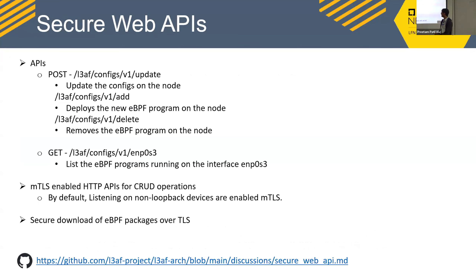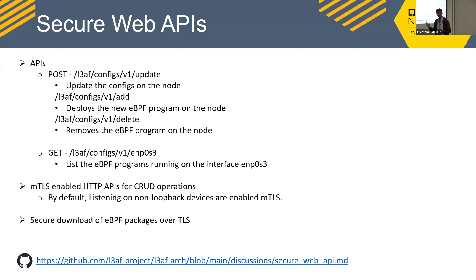LEAF provides secure web APIs: POST APIs to update config, add a new eBPF program, remove an eBPF program from a node, and list all eBPF programs running on a particular interface. It is enabled with mTLS — mutual TLS with zero-trust policy — where both client and server must have valid identities before any request is processed. It also supports downloading eBPF packages from multiple configurable repositories via HTTP or HTTPS, as long as the required certificates are present on the node.